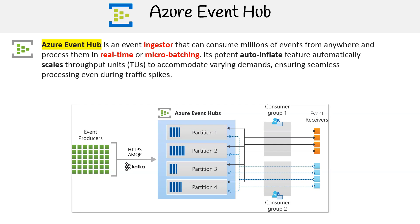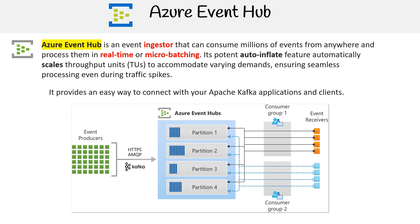Azure Event Hub serves as a critical component for event ingestion, capable of consuming millions of events from myriad sources and processing them in real-time or via micro-batching. Its potent auto-inflate feature automatically scales throughput units to accommodate varying demands, ensuring seamless processing even during traffic spikes. Notably, Azure Event Hub offers seamless integration with Apache Kafka applications and clients, bridging the capabilities of both platforms.